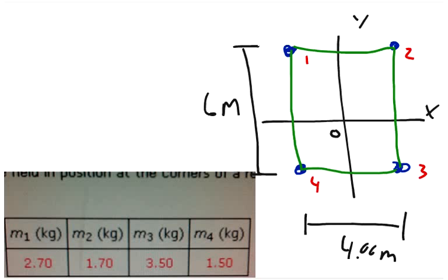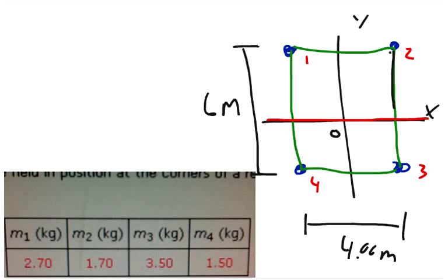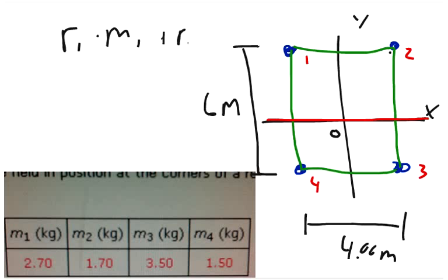So imagine that everything is rotating around the x-axis, going all the way around like that. To find the moment of inertia, we have to measure the radius from the axis of rotation. The radius is the same for all four masses, so we can simplify: it would be radius squared times mass one plus radius squared times mass two, and so on.